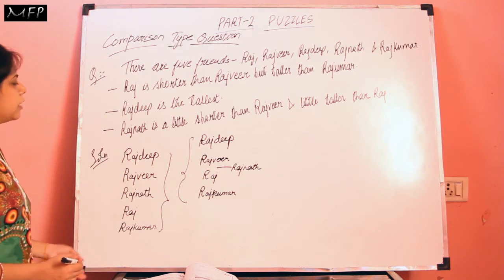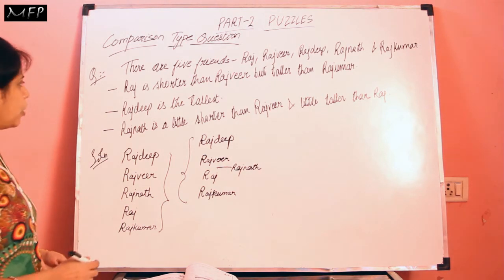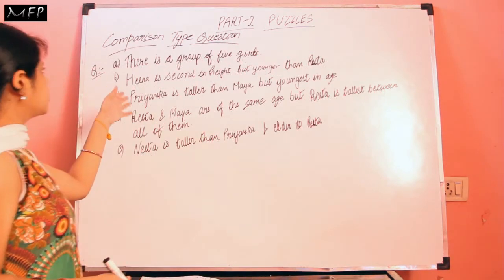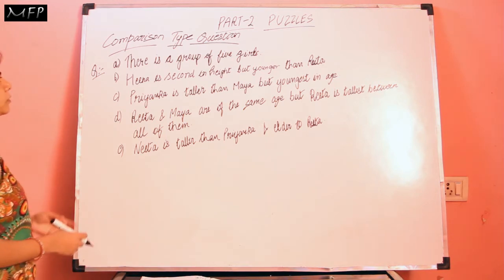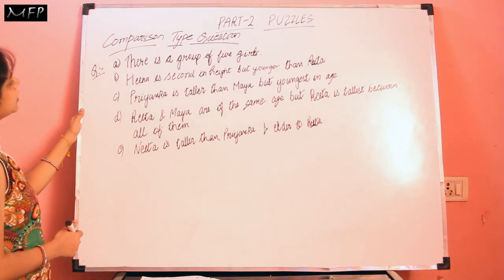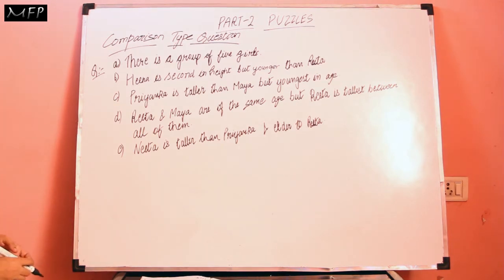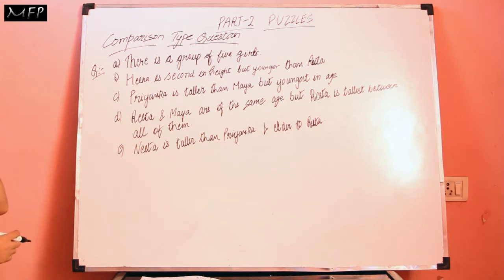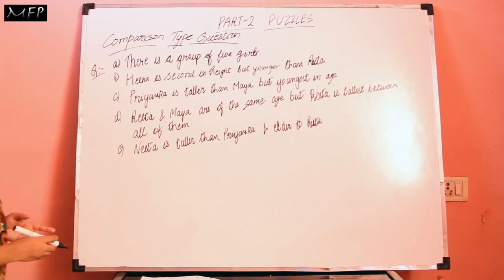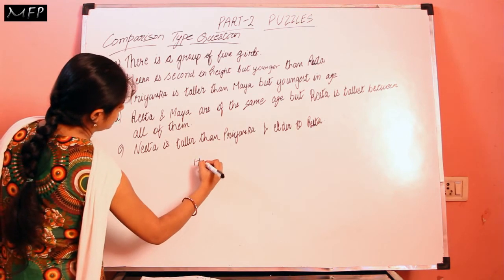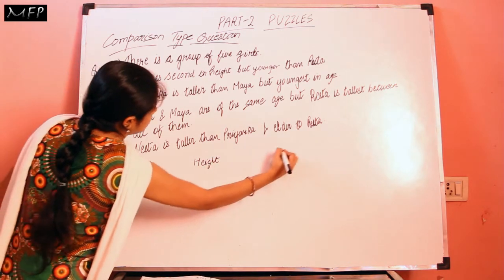If questions are given, we will solve them according to this arrangement. Now let us solve another question of the same type to clear this topic. This is the second question based on comparison type questions of puzzles. Here two things are given — we have to do two comparisons: the comparison between height and the comparison between age. So let us make two columns: first of height, and second of age.